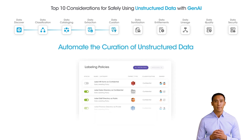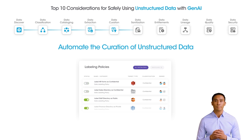Gen AI requires massive volumes of unstructured data for training, inference, and RAG purposes. Automate the curation and labeling of unstructured data and files to make sure only relevant data is used for Gen AI.